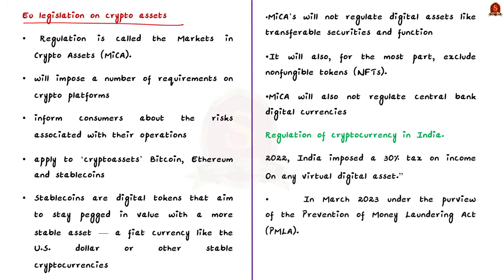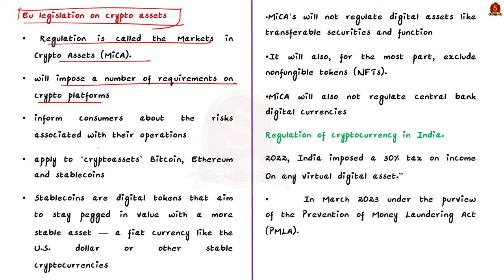Our next topic is the European Union's new crypto legislation. The European Parliament — the legislative body of the 27-country bloc — approved the world's first comprehensive rules to bring largely unregulated cryptocurrency markets under government regulation. The regulation is called Markets in Crypto Assets, shortly known as MiCA. MiCA is the most comprehensive regulatory framework for digital assets to date. The rules impose requirements on crypto platforms, token issuers, and traders around transparency, disclosure, authorization, and the supervision of transactions. Platforms will be required to inform customers about risks associated with their operations, and sale of new tokens will also come under this regulation.